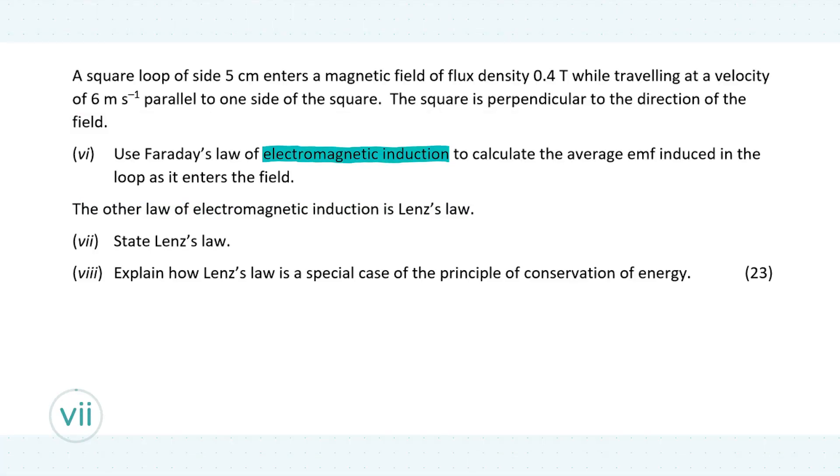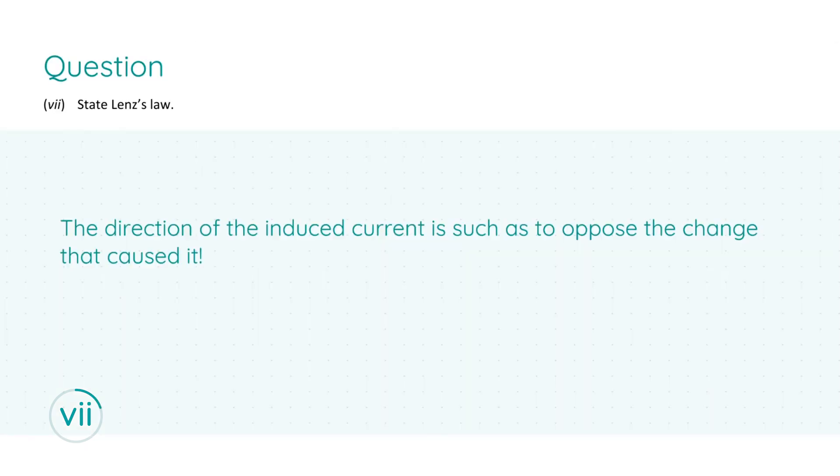Lastly, we are told that the other law of electromagnetic induction is Lenz's law. This bit of information will cover both part seven and eight. In part seven we're asked to state Lenz's law, and it goes as follows. The direction of the induced current, which will give you three marks, is such to oppose the change that causes it, another three marks. The last three marks, that final phrase, really is important, and you'll see why in part eight.